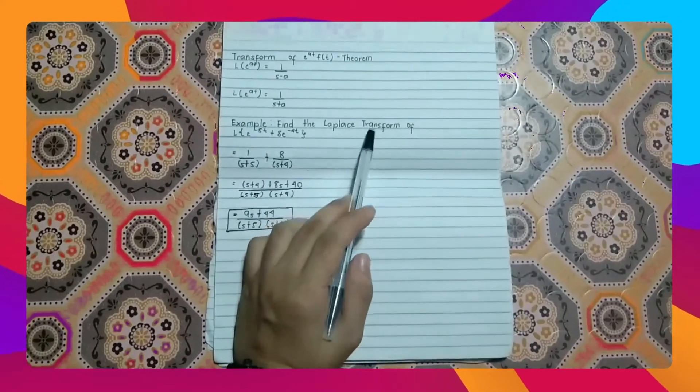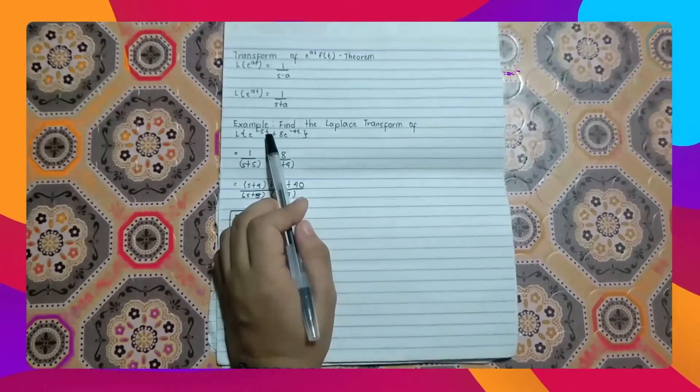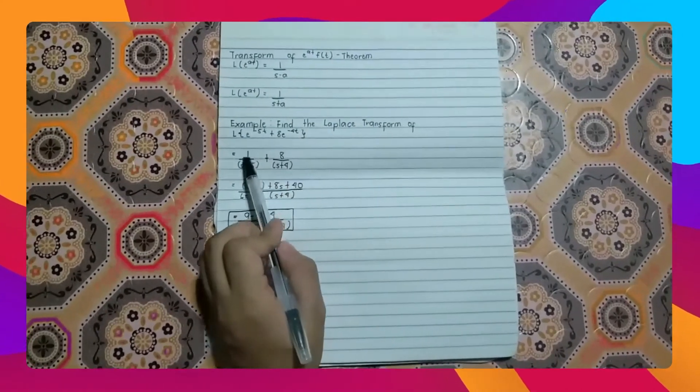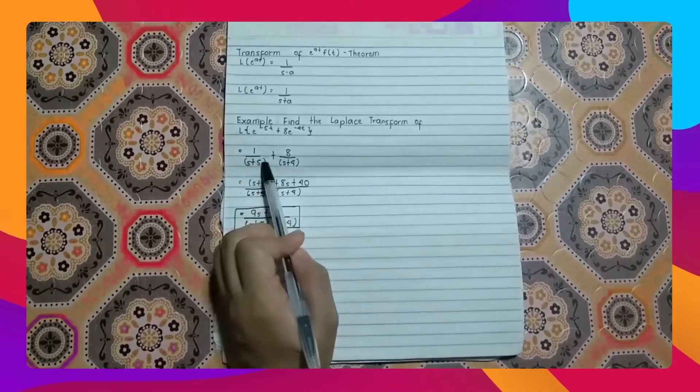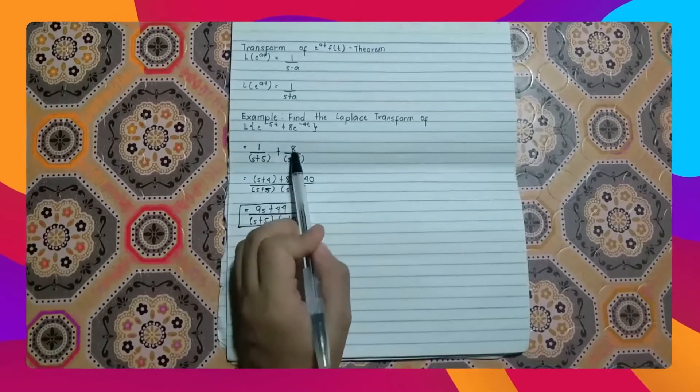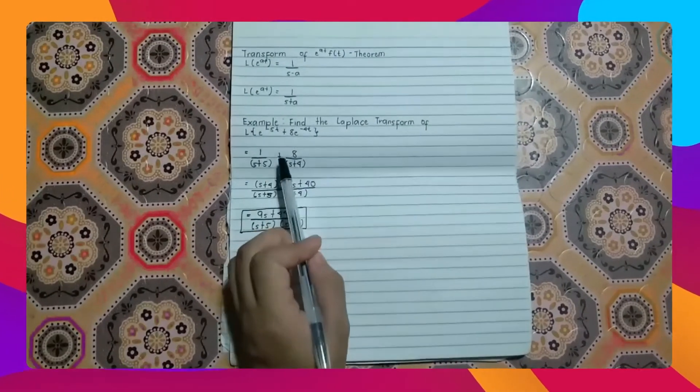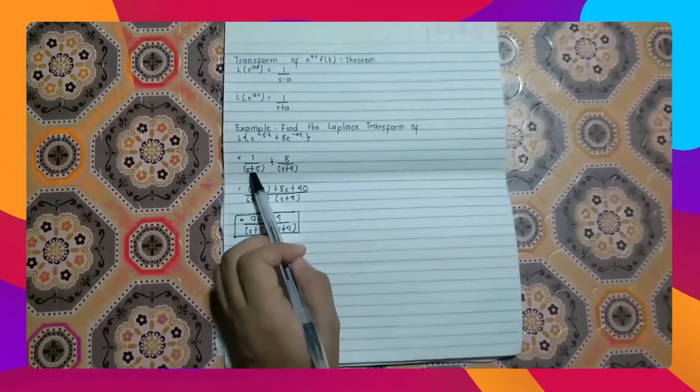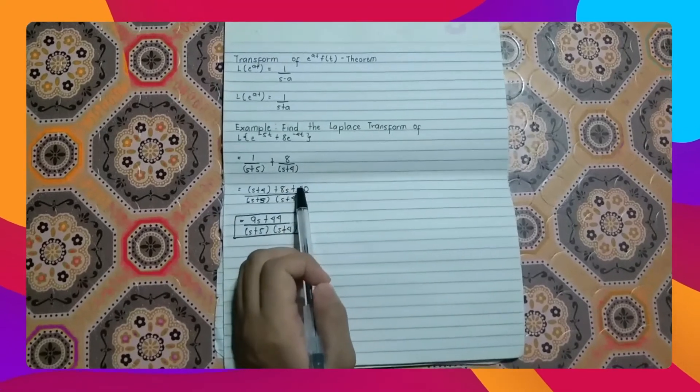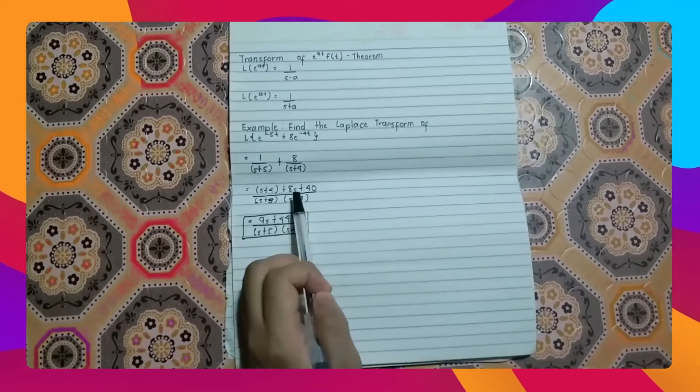This is an example of a Laplace transform. Find the Laplace transform of e raised to negative 5t plus 8e raised to negative 4t. We have 1 over s plus 5 plus 8 over s plus 4. What we are going to do here is cross multiply. We have 1 times s equals s, 1 times 4 equals 4, 8 times s equals 8s, and 8 times 5 equals 40. Then copy the denominator of s plus 5 times s plus 4.